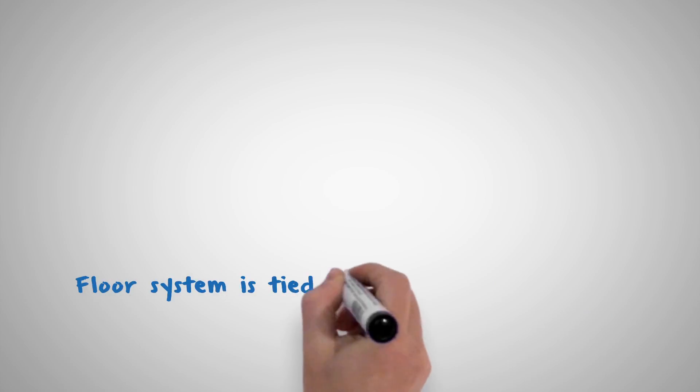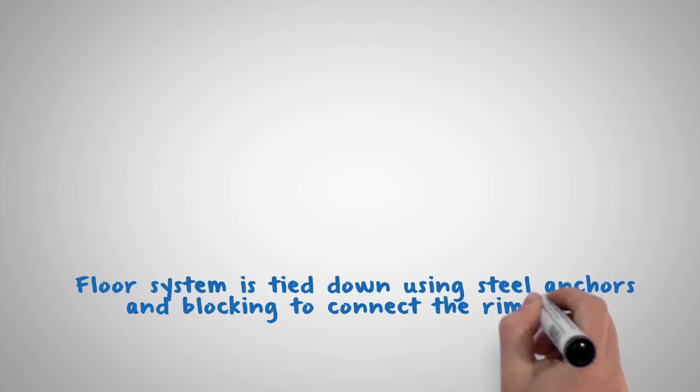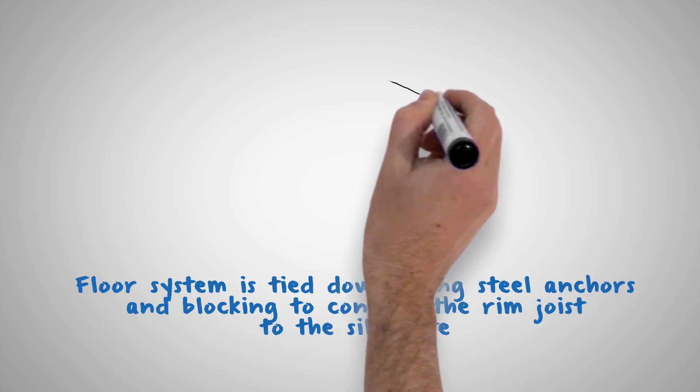And lastly, the floor system is tied down by using steel anchors and blocking to connect the rim joist to the top plate or the sill plate.